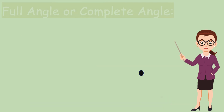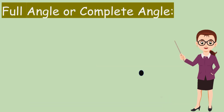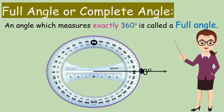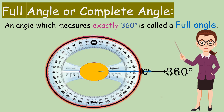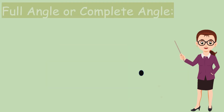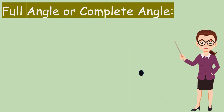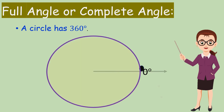Full Angle or Complete Angle: An angle which measures exactly 360 degrees is called a Full Angle or Complete Angle. A circle has 360 degrees.